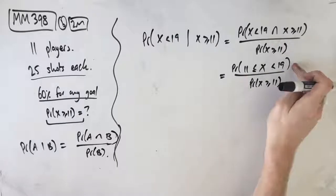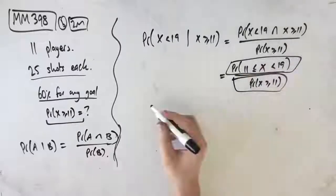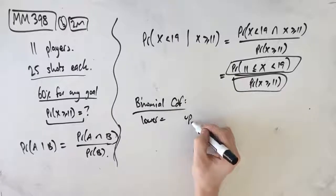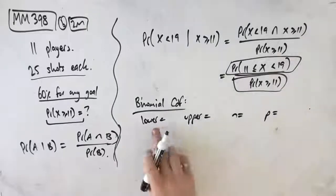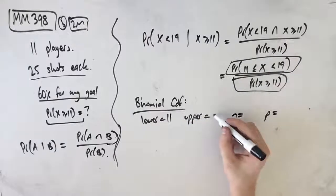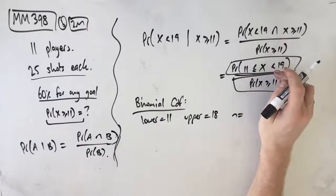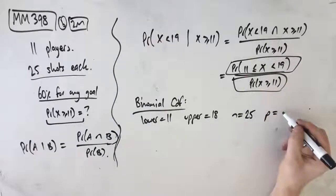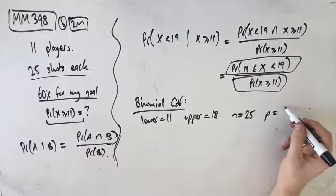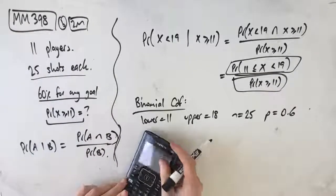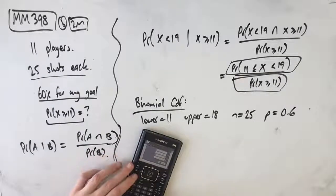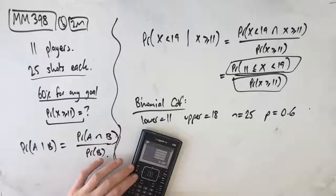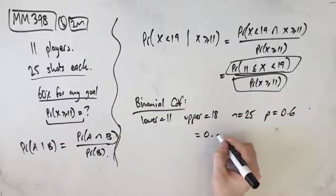We use our binomial distribution and treat each part separately. For the numerator using binomial CDF, it asks for lower, upper, N, and P. Our lower bound is 11 and our upper bound is 18 — not 19, because we're dealing with less than 19, but it is 11 because we're equal to or greater than 11. N is 25 and P is 0.6. Plugging into the CAS — menu 55E, 25 trials, probability 0.6, lower 11, upper 18 — we get 0.8920.